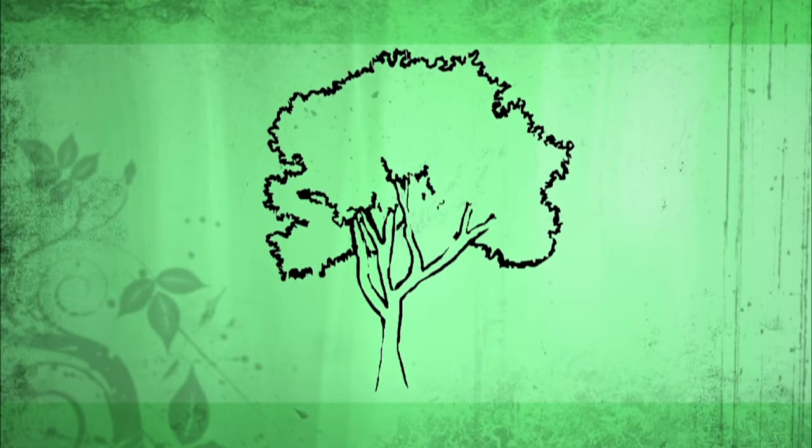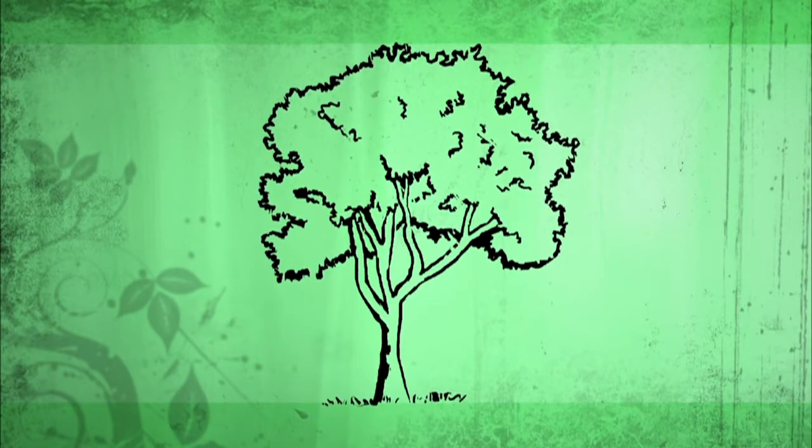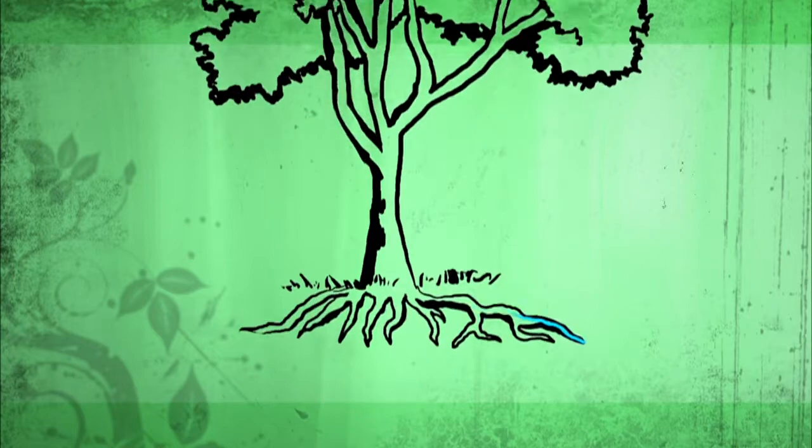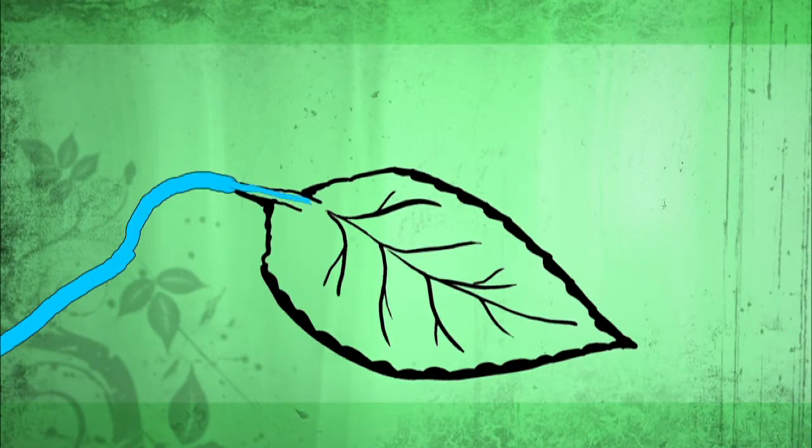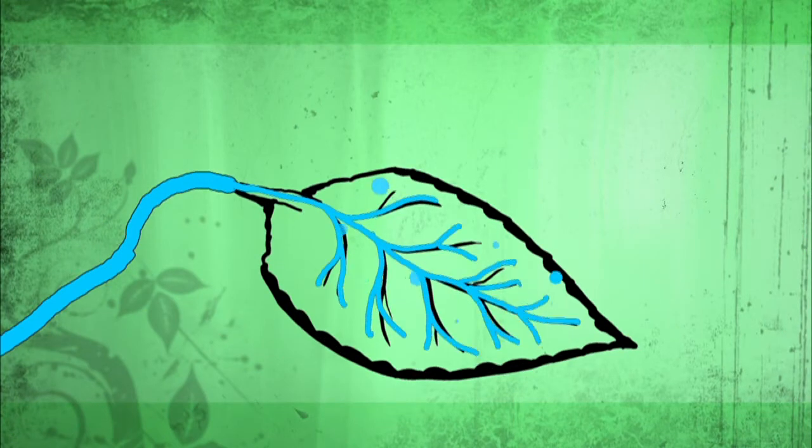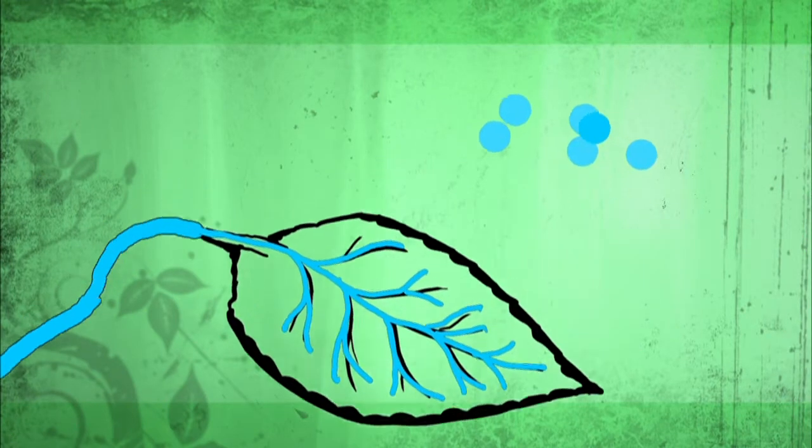Plants also play a role in the water cycle. They absorb moisture through their roots from soil and transport it to their leaves for photosynthesis. There, it leaves the surface of the leaves as water vapor back into the air. This constantly changing water cycle plays